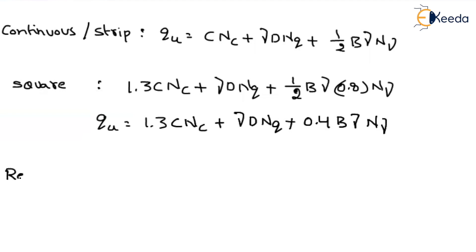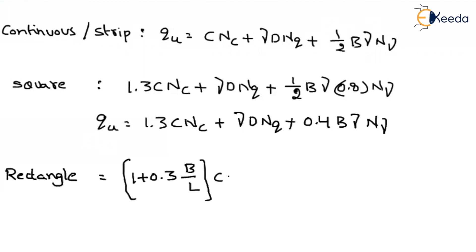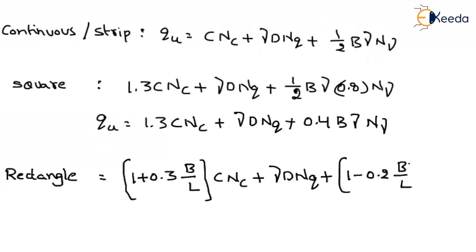For a rectangular footing, the equation becomes: (1 plus 0.3·B/L)·C·Nc, plus γ·D·Nq — since the Nq factor is 1 nothing changes in the depth term — plus (1 minus 0.2·B/L) times one-half times B times γ times Nγ.